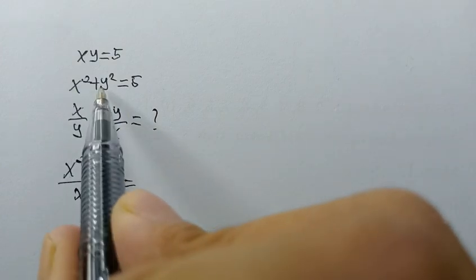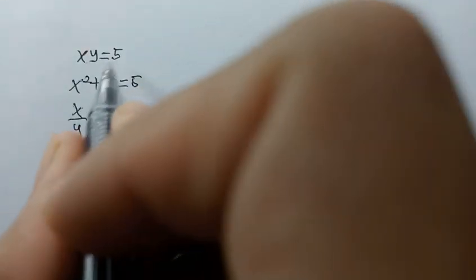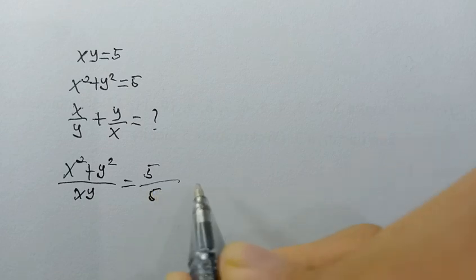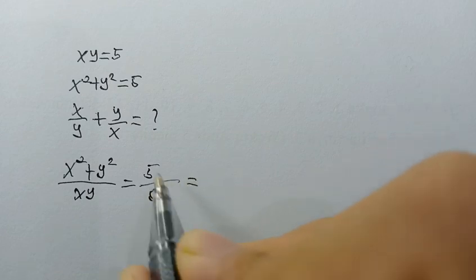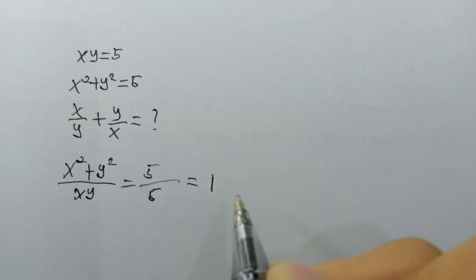We know that x squared plus y squared is equal to 5, and x times y is equal to 5. This is equal to 1, because 5 over 5 is equal to 1.